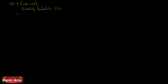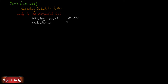We start the quantity schedule with units to be accounted for. If you've done 6.6 under average cost, you'll find this first part is identical. Work in process beginning count is 80,000 units. Units started were 760,000, giving a total of 840,000 — the same as under average cost. There are the total units we must account for. Once we have units to be accounted for, we're ready for units accounted for as follows.